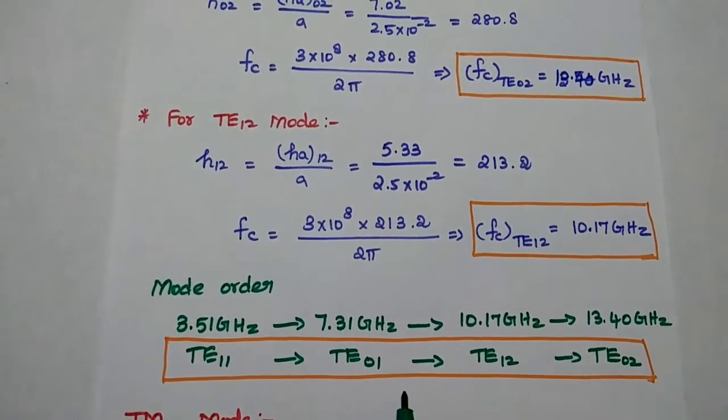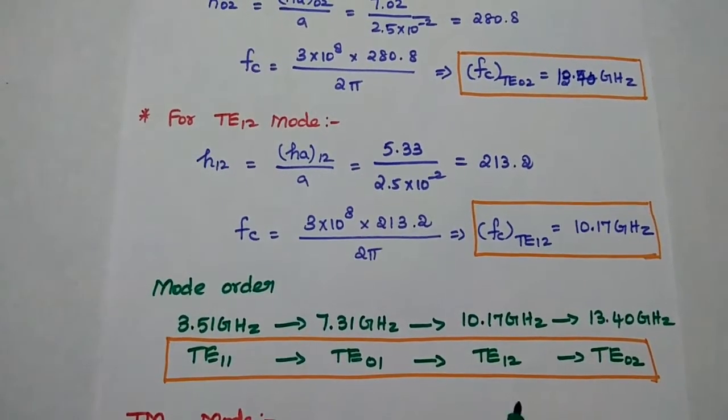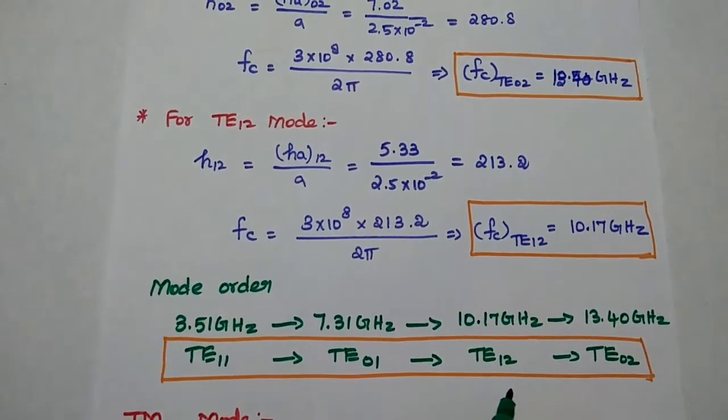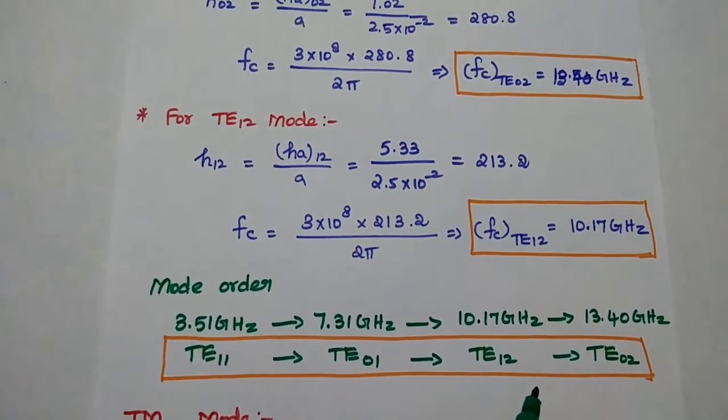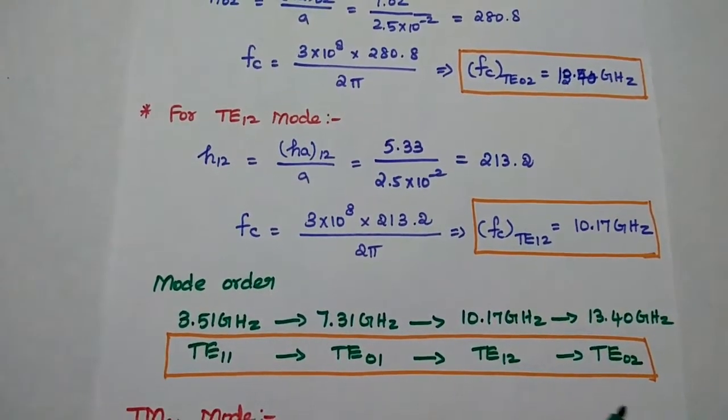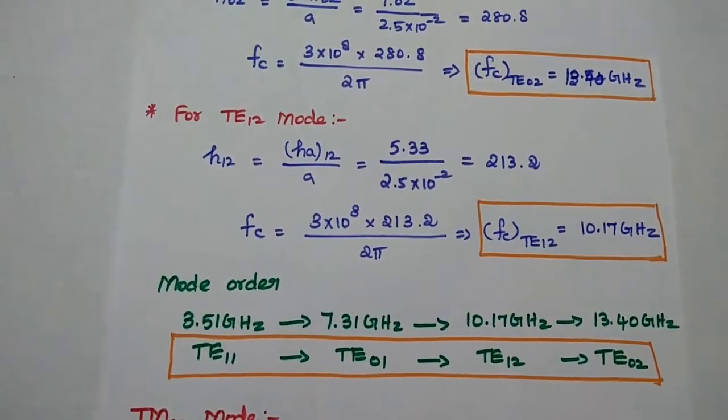So the next order is TE01, then the next higher order is TE12, and then TE02.